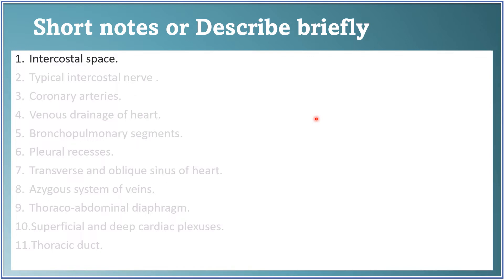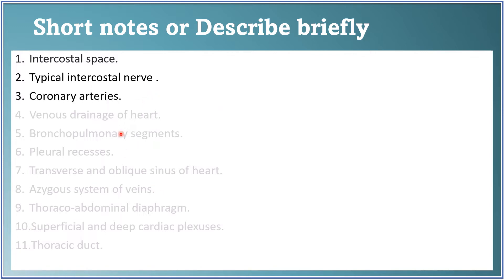Now let us look at short notes. First is intercostal space — write about the intercostal muscles, intercostal arteries, and intercostal nerve. Very important and most commonly asked is the typical intercostal nerve: its origin, course, branches, and structures supplied.